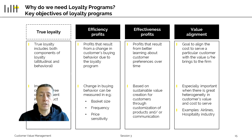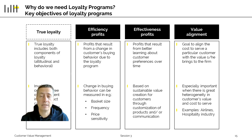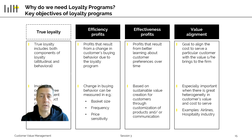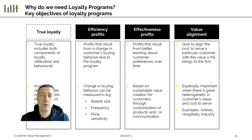In addition to efficiency profits, we have effectiveness profits, which are profits that result from better learning about customer preferences over time. A loyalty program allows you to link purchases of the customer together. Think of a supermarket — a supermarket without a loyalty program has no way of knowing whether the same customer comes back every week, twice a week, or every day to buy certain items and to link these purchases together.